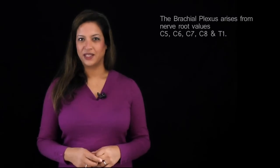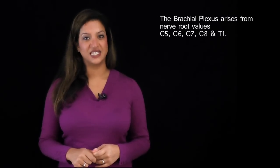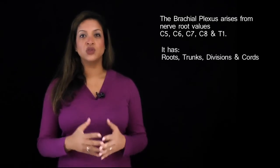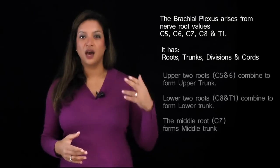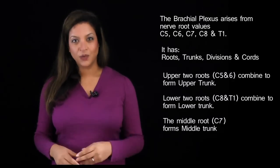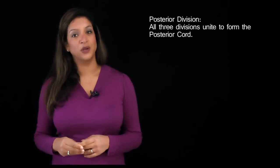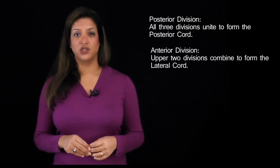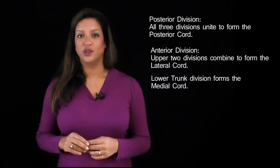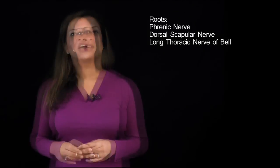To summarise: the brachial plexus arises from nerve roots C5, C6, C7, C8, and T1. It has roots, trunks, divisions, and cords. The upper two roots combine to form the upper trunk, the lower two roots combine to form the lower trunk, and C7 goes it alone as the middle trunk. Each trunk divides into anterior and posterior divisions; all posterior divisions unite to form the posterior cord; the upper two anterior divisions form the lateral cord; and the anterior division of the lower trunk continues as the medial cord. From the roots, remember: C5's contribution to the phrenic nerve, the dorsal scapular nerve from C5, and the long thoracic nerve of Bell.